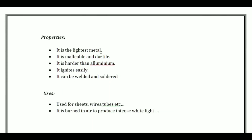Properties of magnesium: it is the lightest metal, malleable and ductile, harder than aluminum, and ignites easily. It can be welded or soldered. Uses: sheets, wires, tubes, and it burns in air to produce intense white light.